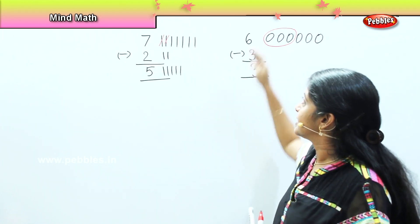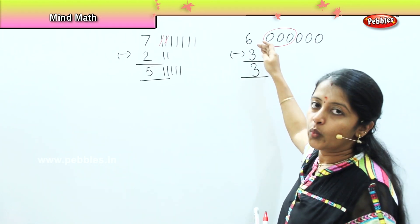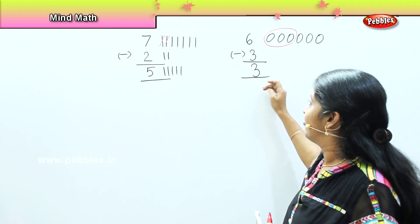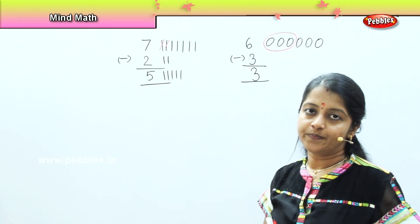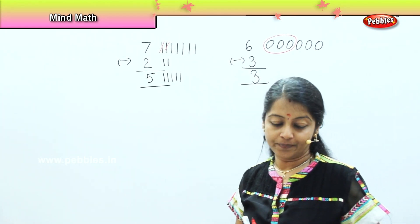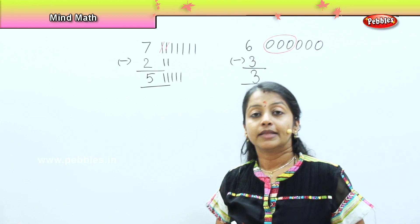So what did we learn here? Six when reduced by three will give me the answer three.